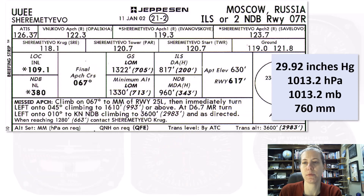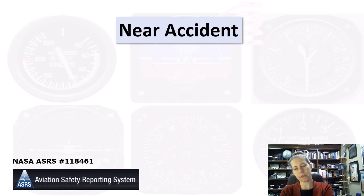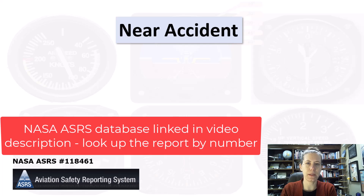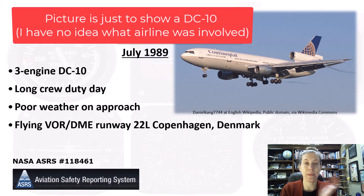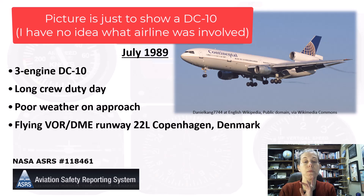Okay, why do I care about any of this? Well, let's look at a near-accident. This is a NASA Aviation Safety Reporting System report — the number is shown and I'll link to it in the description. This occurred in July of 1989. It was a three-engine DC-10 — I don't know what airline, it's all de-identified. They were on a pretty long duty day going into Copenhagen, flying a VOR DME approach. Weather was poor, visibility was bad, and they were in instrument meteorological conditions.